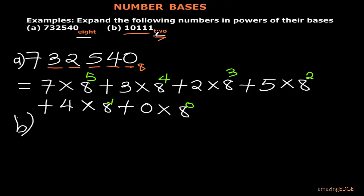So we write the number: we have 1, 0, 1, 1, 1 — and this is in base 2. Instead of doing the full expansion first, you can start by assigning the powers directly. So starting from the right, you assign: 0, 1, 2, 3, 4. This is the same approach as what we did above, using place values to determine the powers before expanding.